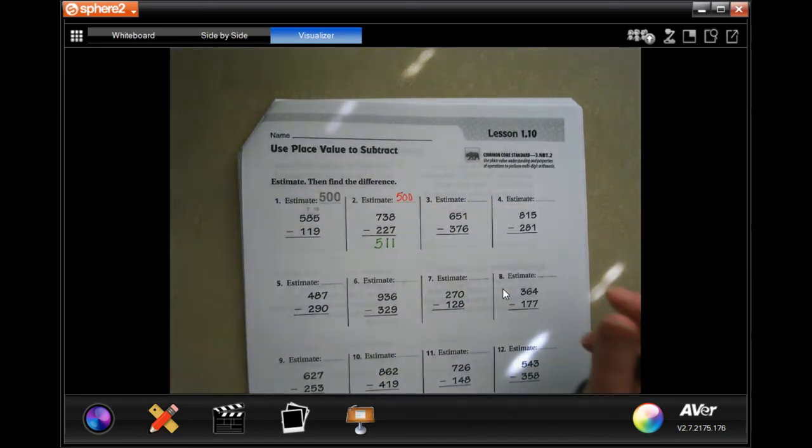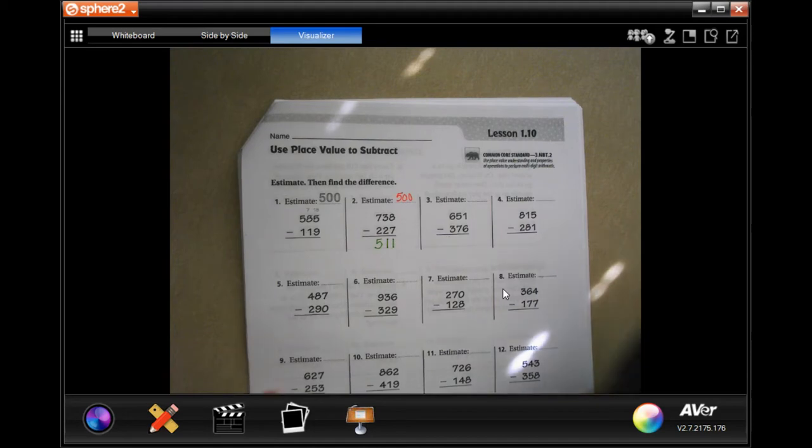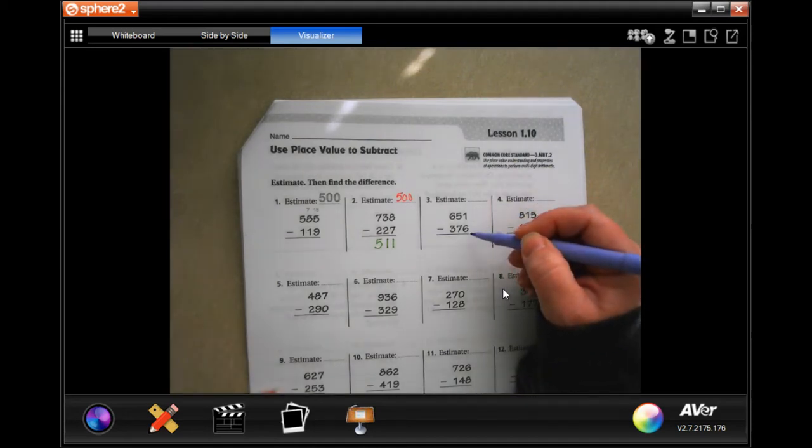The biggest thing to remember here is that you always subtract down. So I know it's a little bit confusing when you have to borrow, but you have to remember that you only subtract down. So when you see that the top number is smaller than the bottom number, that means borrow. That does not mean go up.